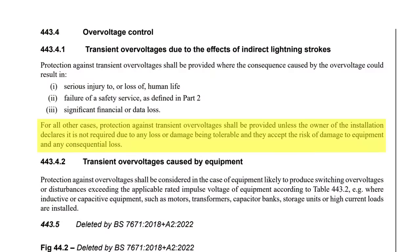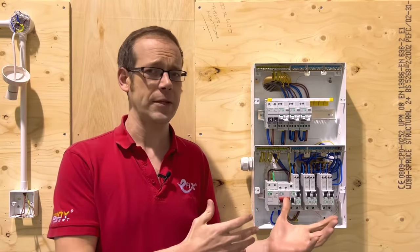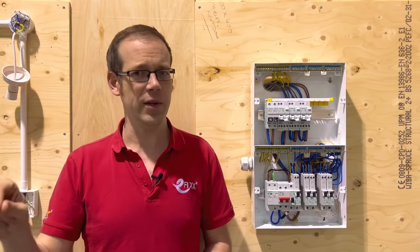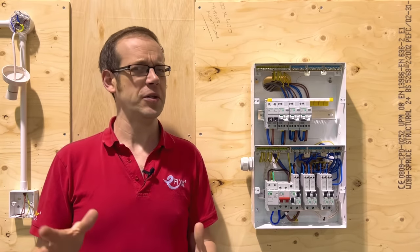For all of the cases, protection against transient overvoltages shall be provided unless the owner of the installation declares it is not required due to any loss or damage being tolerable and they accept the risk of damage to equipment and any consequential loss. So for some reason, if you're installing a consumer unit into a domestic property where none of the three indents apply, it's now down to the installation owner to decide if they want it or not. That feels a little bit strange to me.